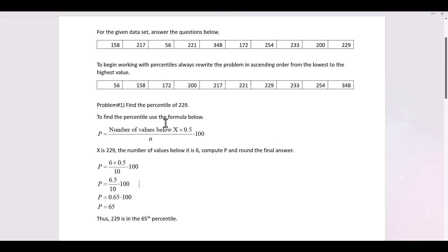We're ready to calculate P. So the number of values below X is 6 plus 0.5. N is 10 data values. N is simply the number of given data values. 6 plus 0.5 is 6.5, divided by 10 is 0.65 times 100, 65. Thus 229 is in the 65th percentile.